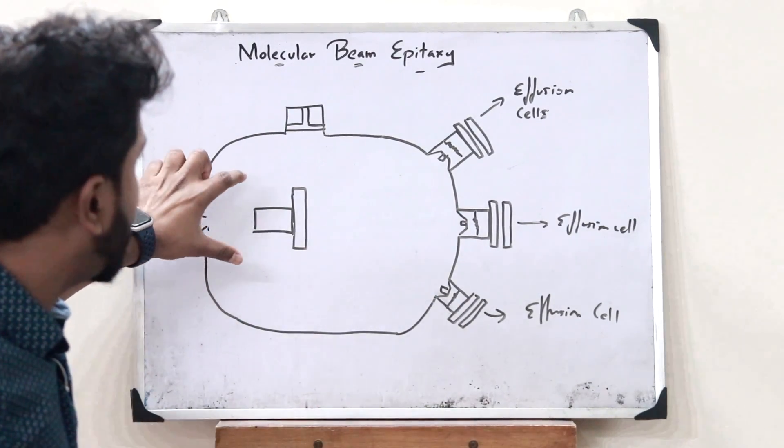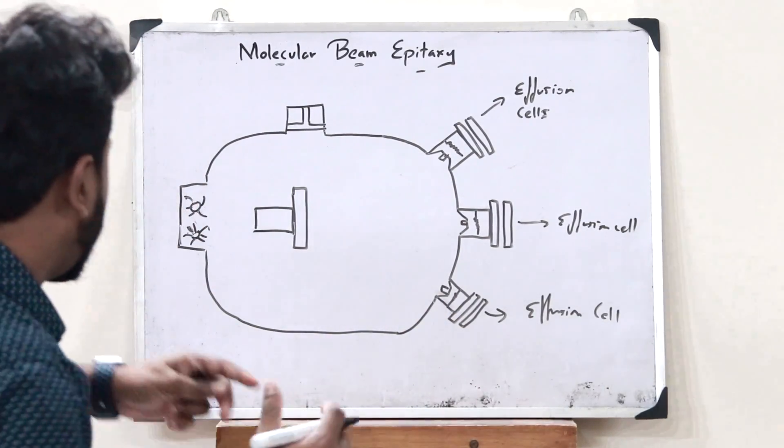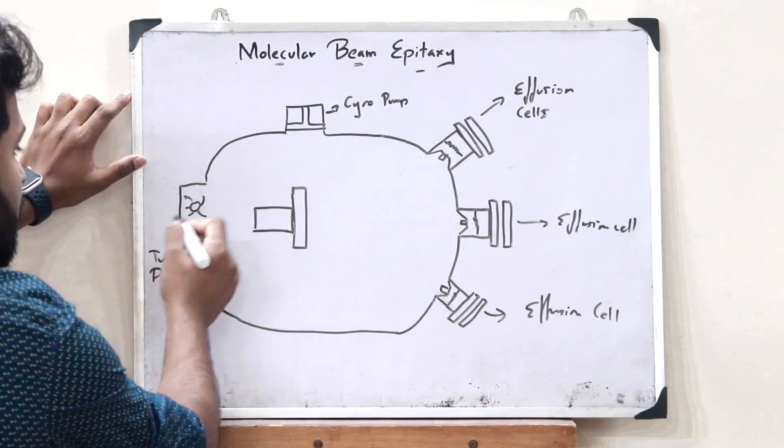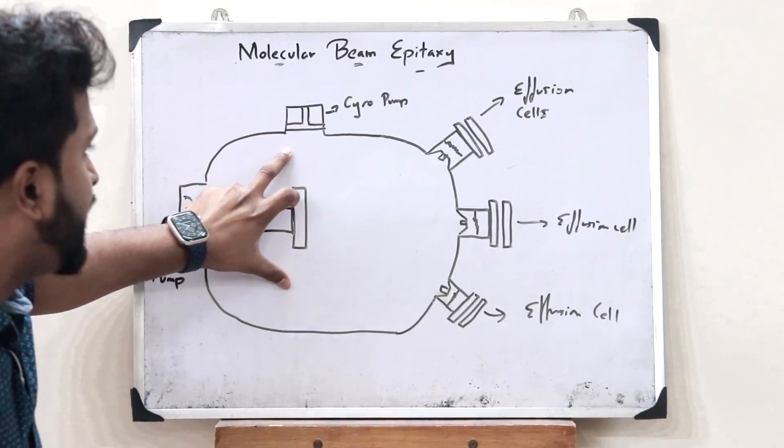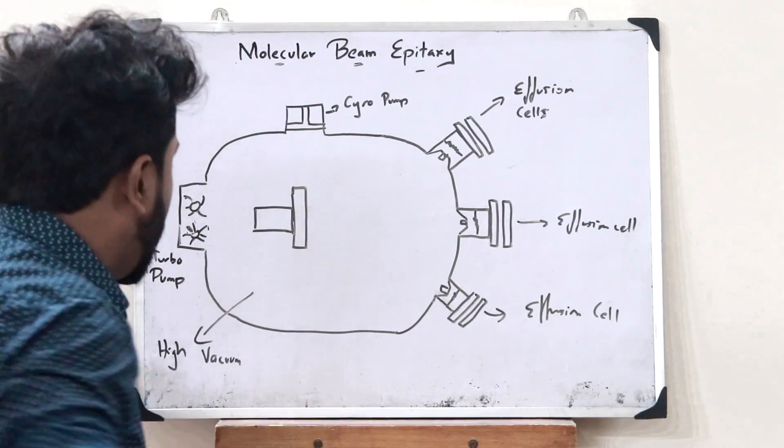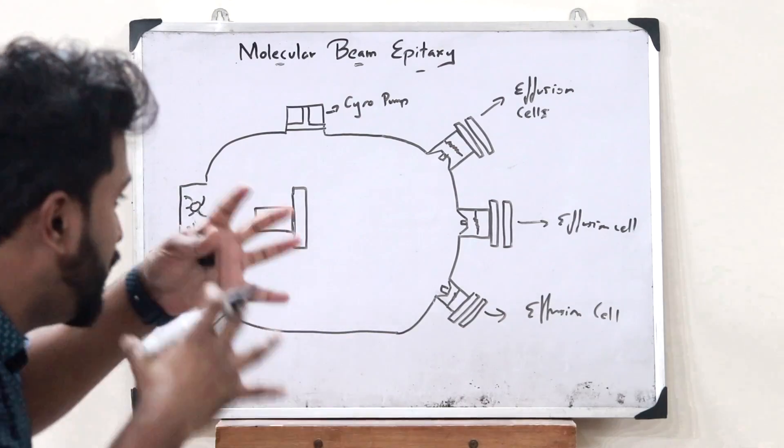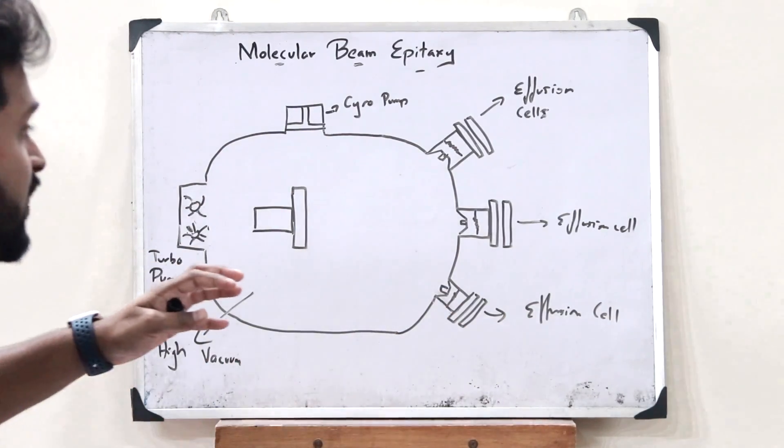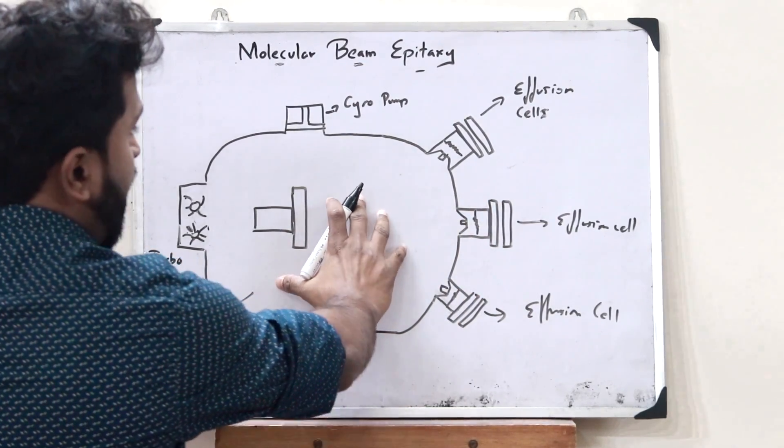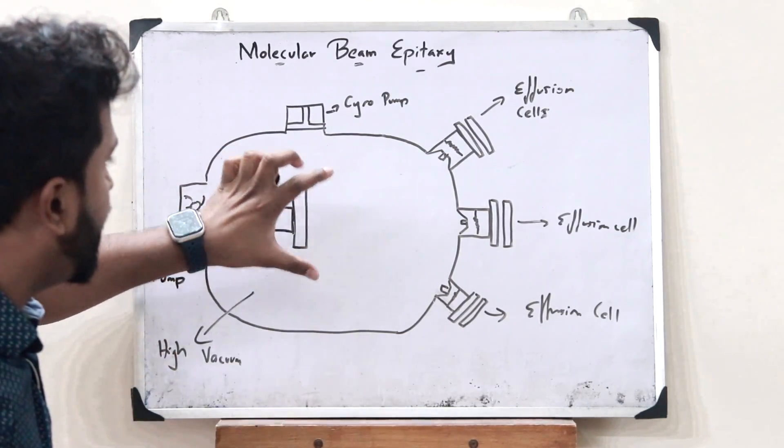So here, the first thing that we have to do is that this particular apparatus must be created into a very high vacuum state. So for that, we have a turbo pump over here. So now here, when this particular turbo pump starts rotating, here a vacuum is created inside this particular apparatus. So here, we need this particular apparatus to be in a very high vacuum state in order to prevent impurities from creeping inside this particular apparatus and also to prevent the molecules present inside this particular apparatus to collide with each other.